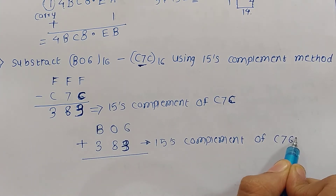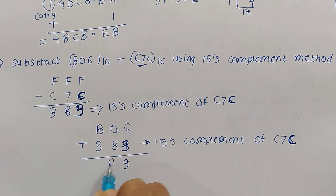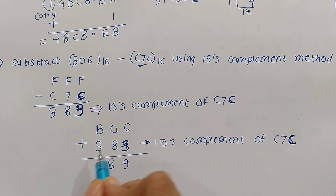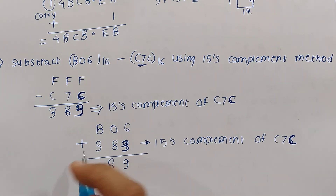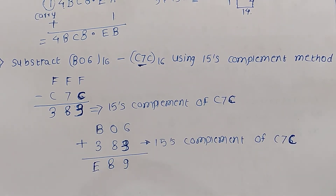To subtract C76 from B06, we add B06 plus 383 (the 15's complement of C76). 6 plus 3 is 9. 0 plus 8 is 8. B plus 3: B is 11 and 11 plus 3 is 14, which is E. So the result is E89, and here there is no carry.